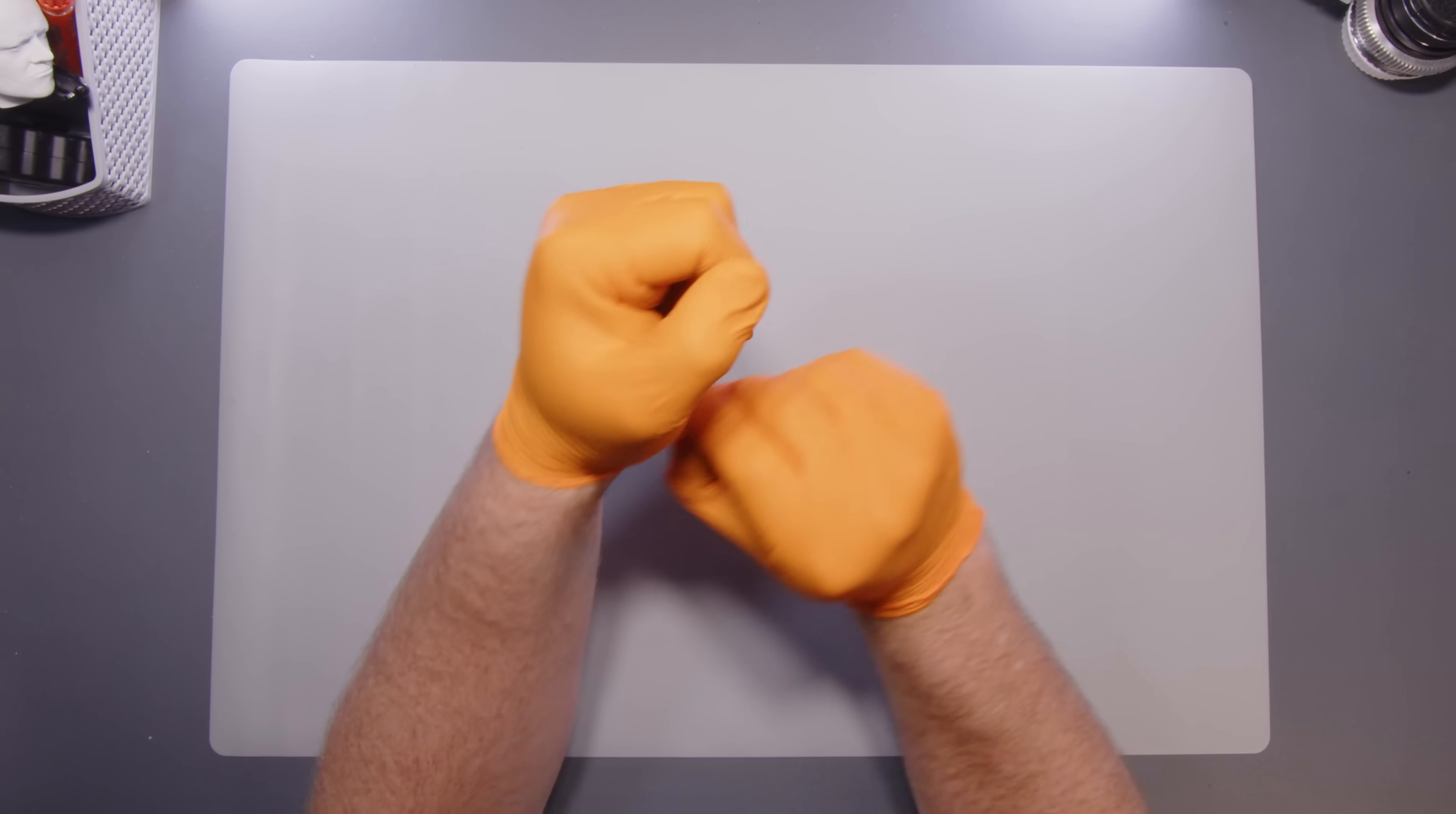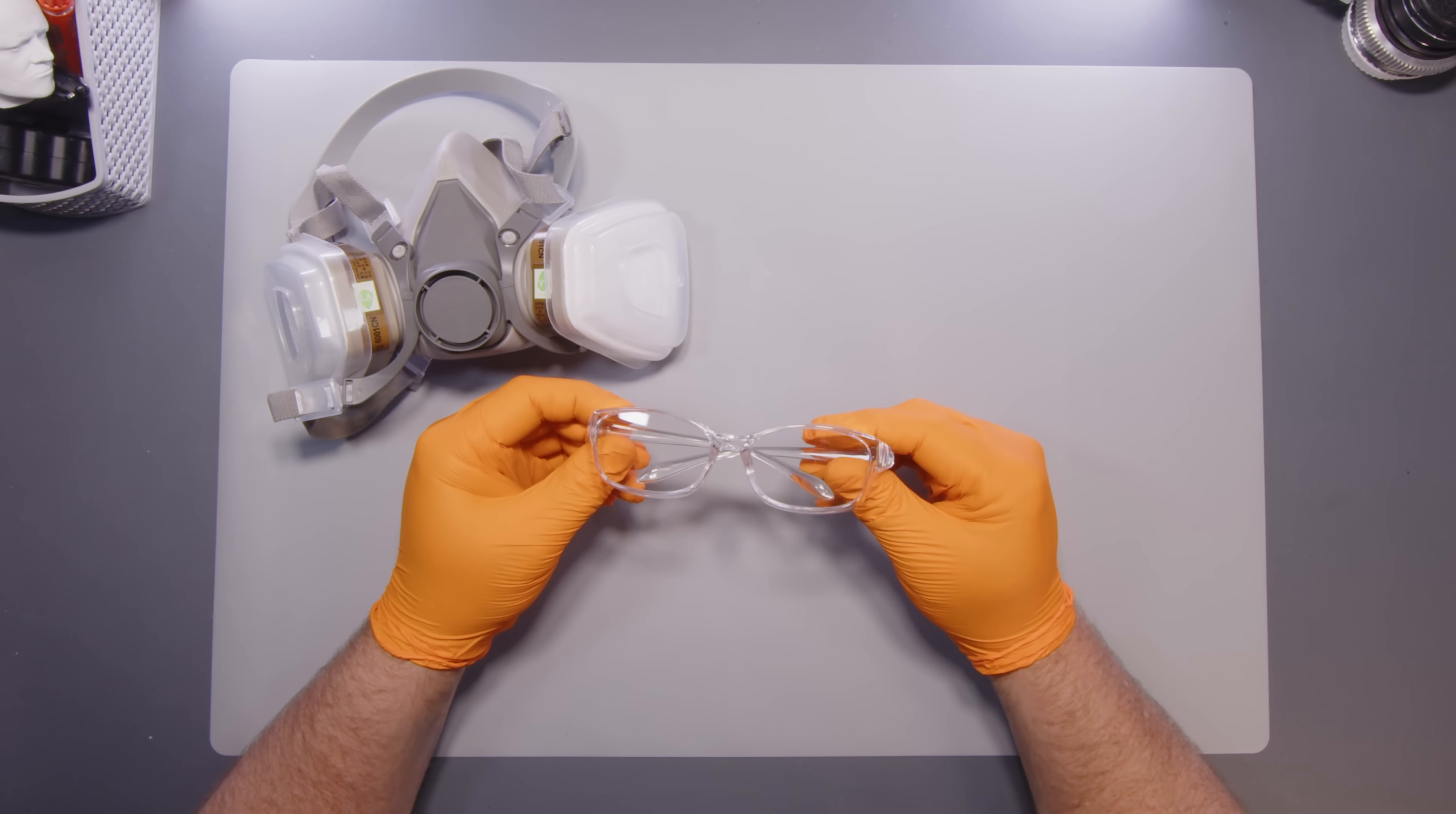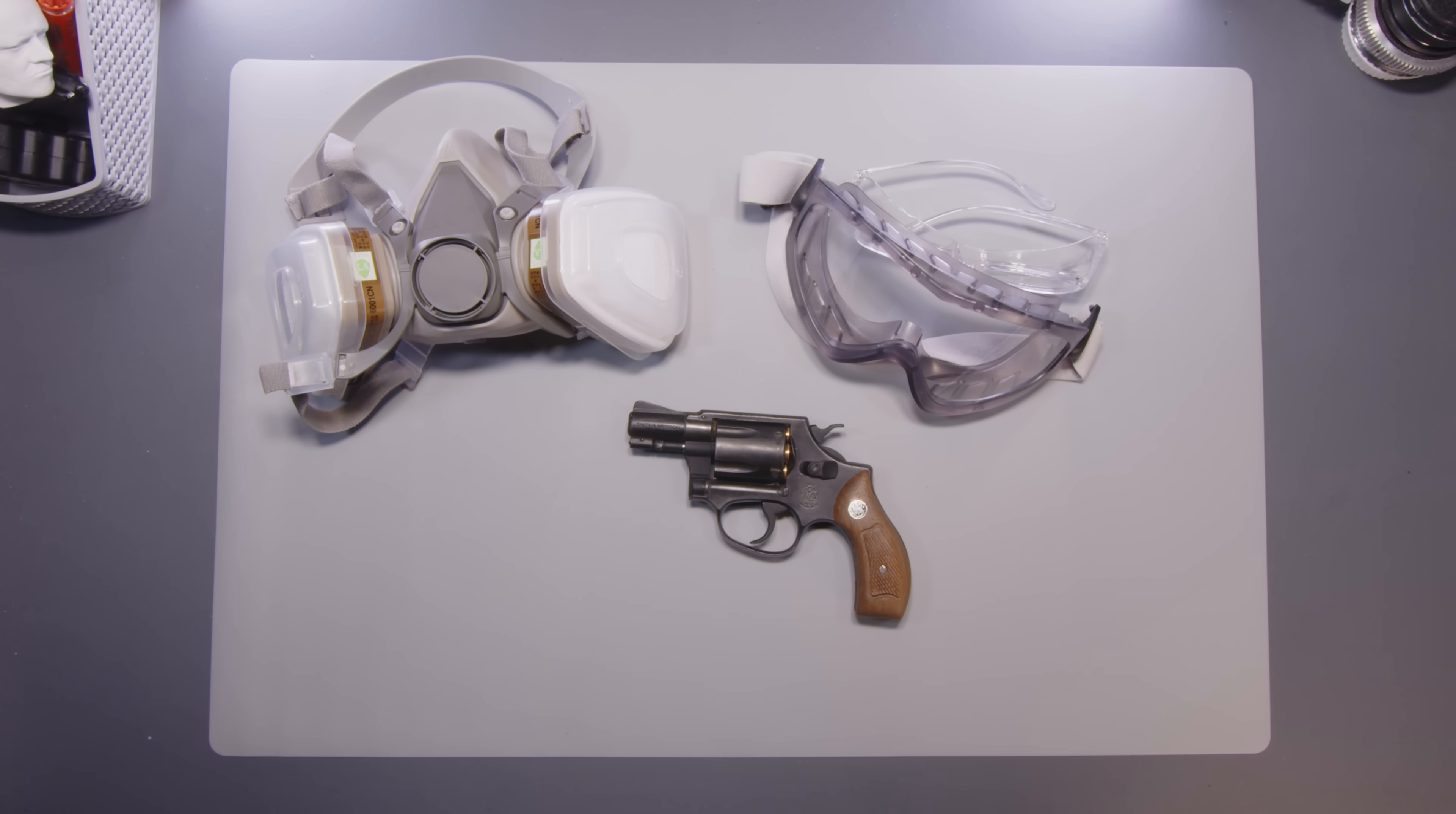Before printing anything in resin, it is very wise to make sure that you have the correct PPE to properly protect yourself. This includes a mask respirator, gloves, and eye protection. A good quality respirator with replaceable filters should last you a long time, and decent eye protection with protective areas around the sides are to be preferred. It's worth spending a few extra pennies on trusted and rated brands for PPE, as this investment is directly protecting you and your health. A well-ventilated space is also a must.